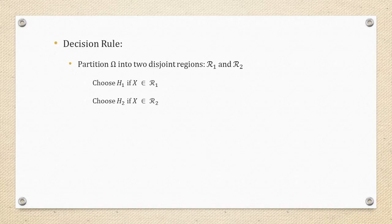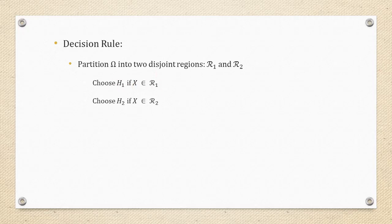Let's define an arbitrary decision rule — it could be chosen arbitrarily or by some metric — and we'll compare it with the Bayes decision rule, proving that Bayes is always better or at least as good, no matter how carefully you choose the arbitrary rule. In our arbitrary decision rule, we choose hypothesis 1 when x is in region 1 and hypothesis 2 when x is in region 2. Region 1 and region 2 form a partition of capital omega, so x must fall into exactly one of these two sets.